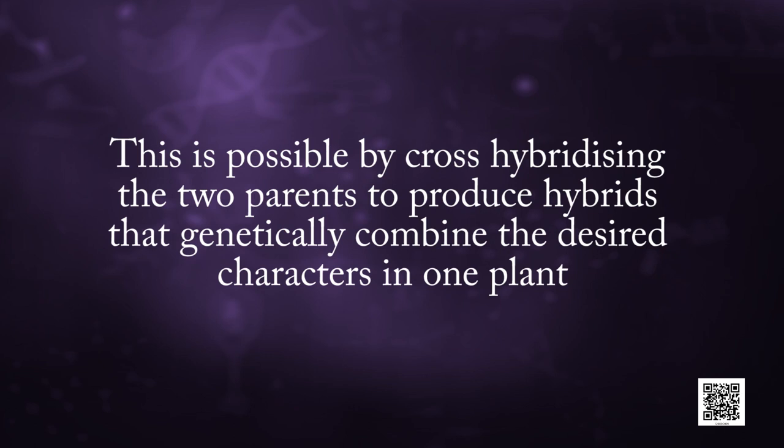The desired characters very often have to be combined from two different parents. For example, one having high protein quality may need to be combined with disease resistance from another parent. This is possible by cross hybridizing the two parents to produce hybrids that genetically combine the desired characters in one plant. This is a very time consuming and tedious process since the pollen grains from the desirable plant chosen as male parent have to be collected and placed on the stigma of flowers selected as female parent. Usually only one of a few hundreds to a thousand crosses shows the desirable combination.